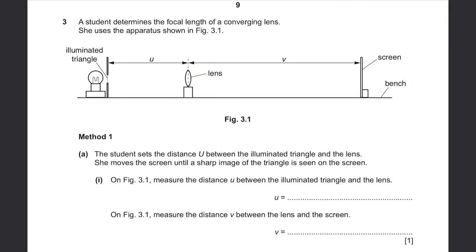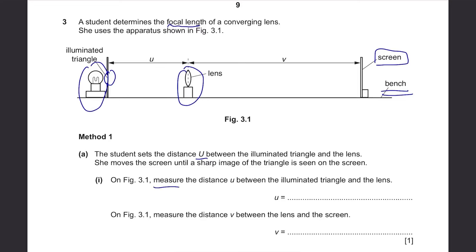Question 3. A student determines the focal length of a converging lens using the apparatus in figure 3.1. There is a lamp, a lens, an illuminated triangle placed near the lamp, and a screen. Method 1, Part A: the student sets distance U between the illuminated triangle and the lens, then moves the screen until a sharp image is seen. Measure U from figure 3.1 — it should be around 4.0cm — and measure V between the lens and the screen — it's 8.6cm.